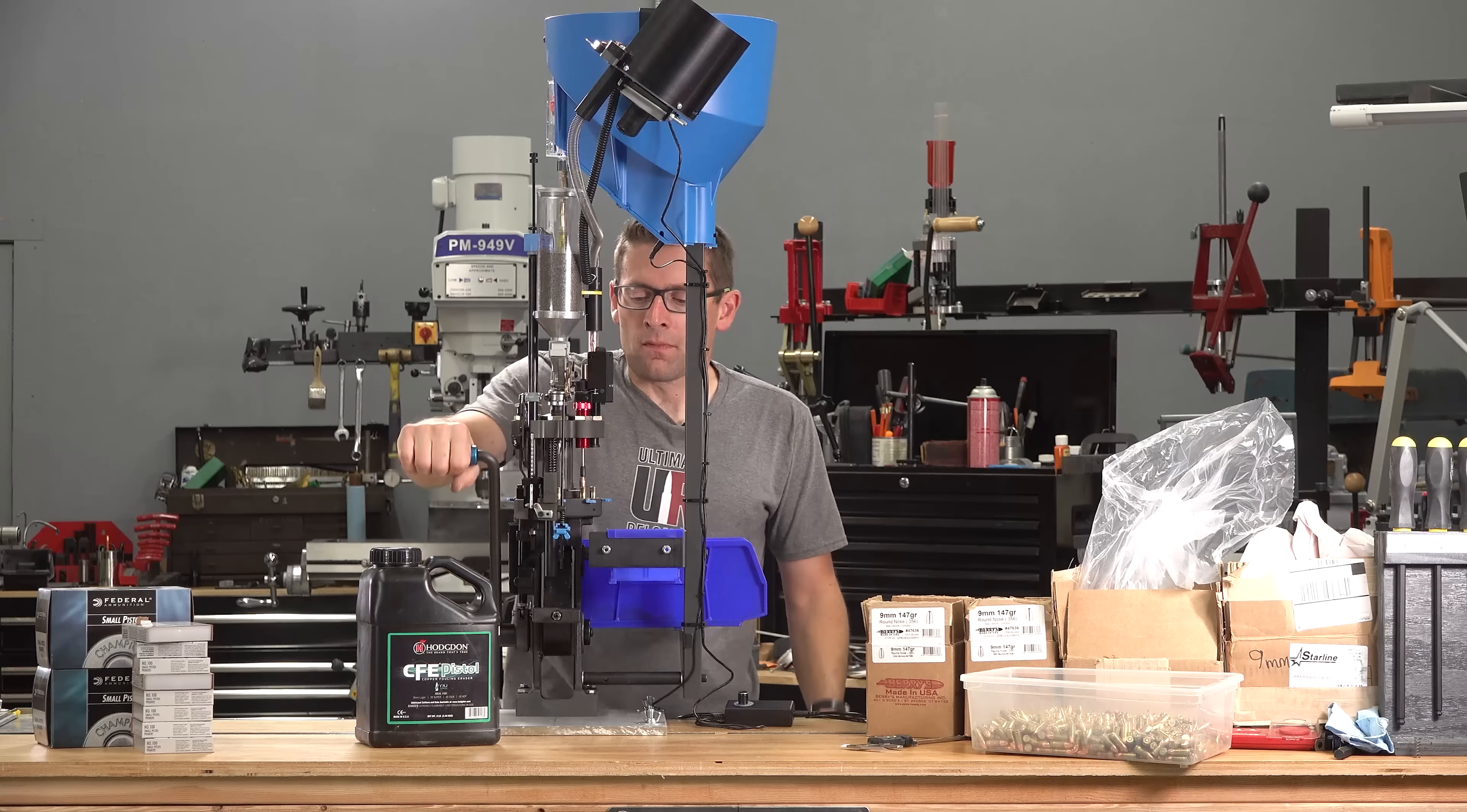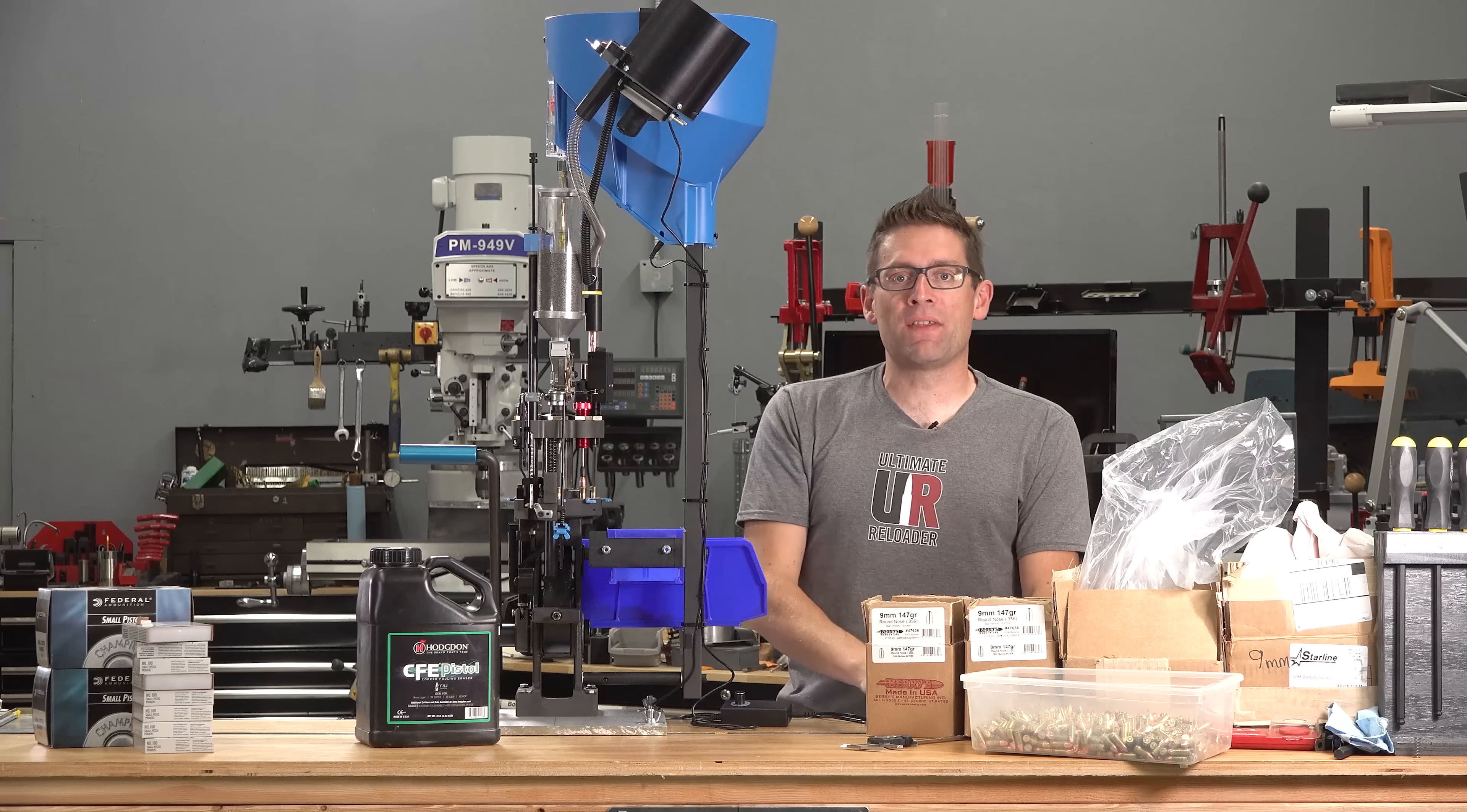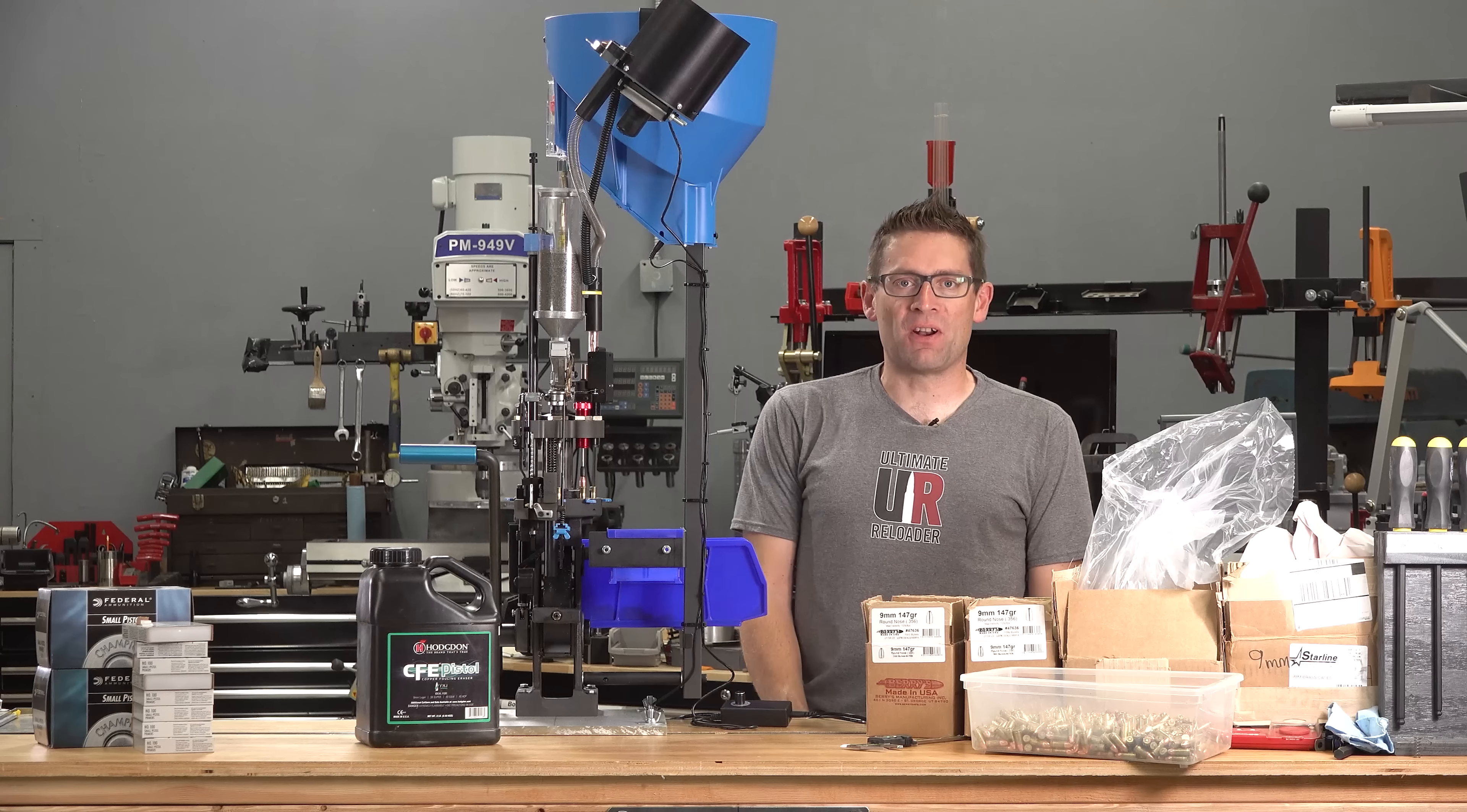Well, this setup is going to keep me busy for a while. I'm going to be loading thousands of rounds with the Dillon RL 1100 and the Mr. Bullet Feeder. This Double Alpha Academy magnetic powder check is the perfect complement. I hope you enjoyed this video. If you did, please give it a thumbs up. Here's what I'd like to know: what do you think of this setup? Are you running an RL 1100 with a bullet feeder or some similar setup? Please drop a comment and we'll start a discussion.